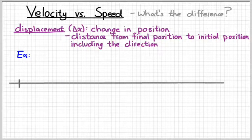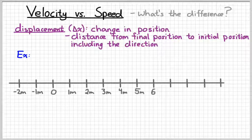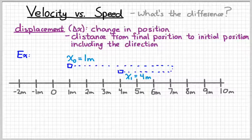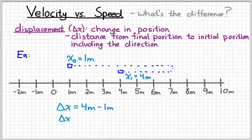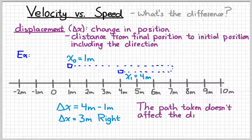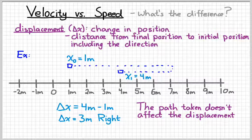So, for example, suppose we had a simple number line, and we have an object that moves along the number line. Suppose that it starts at 1 meter and then moves to 4 meters. So, our initial position is 1 meter, and our final position is 4 meters. The displacement is simply the difference between 4 meters and 1 meter, which is 3 meters. We need to include a direction, so we say 3 meters to the right. But the path that the object actually takes is irrelevant. All we need to know is where it started and where it ended, not what its actual path was.